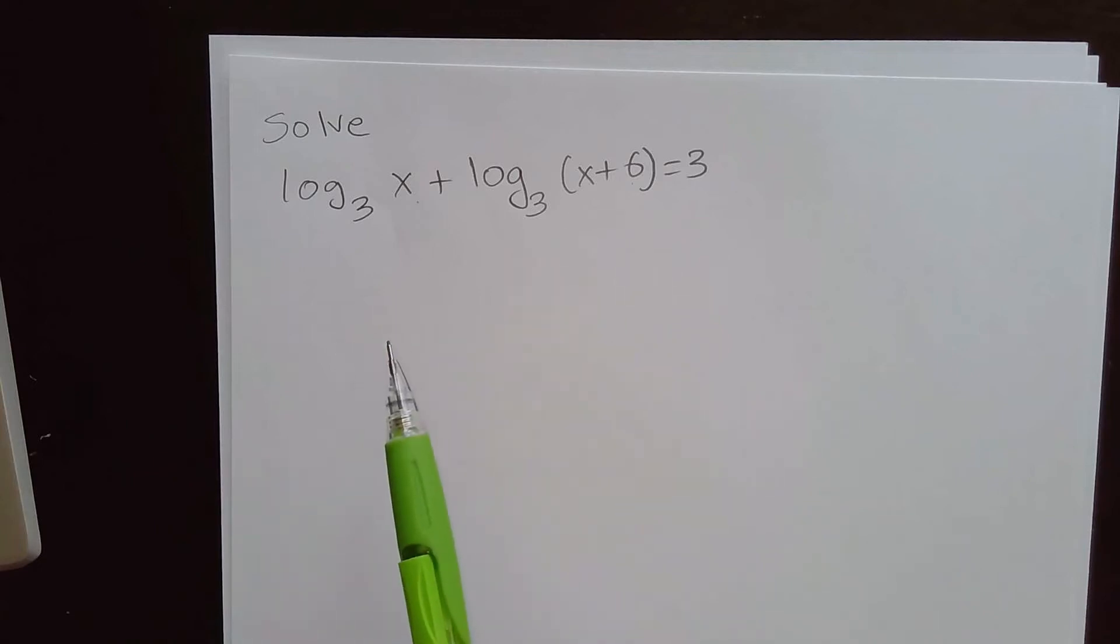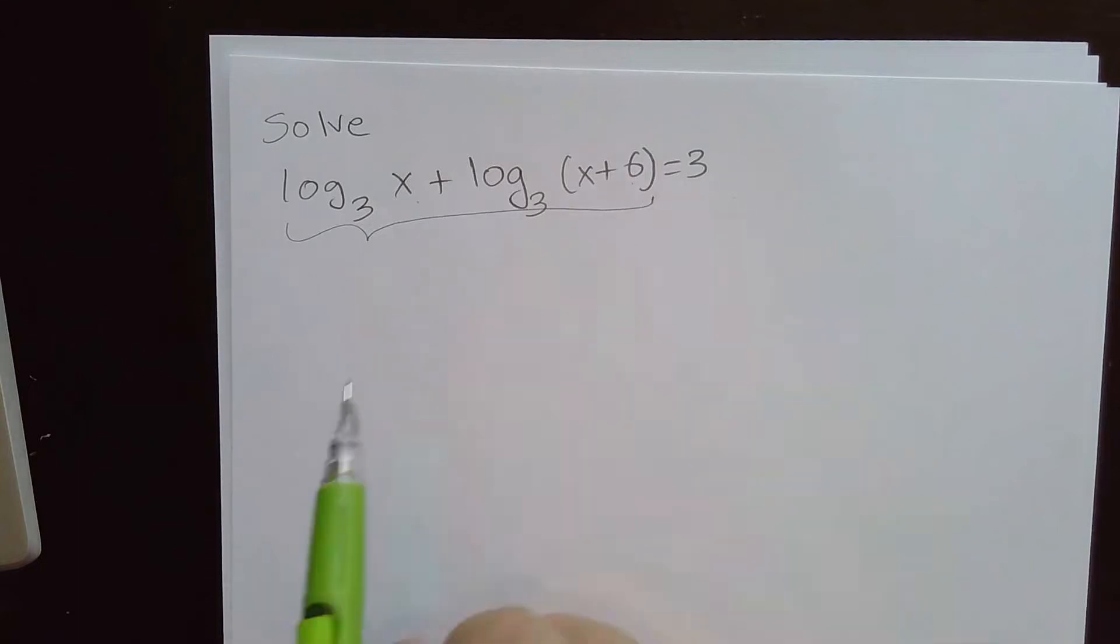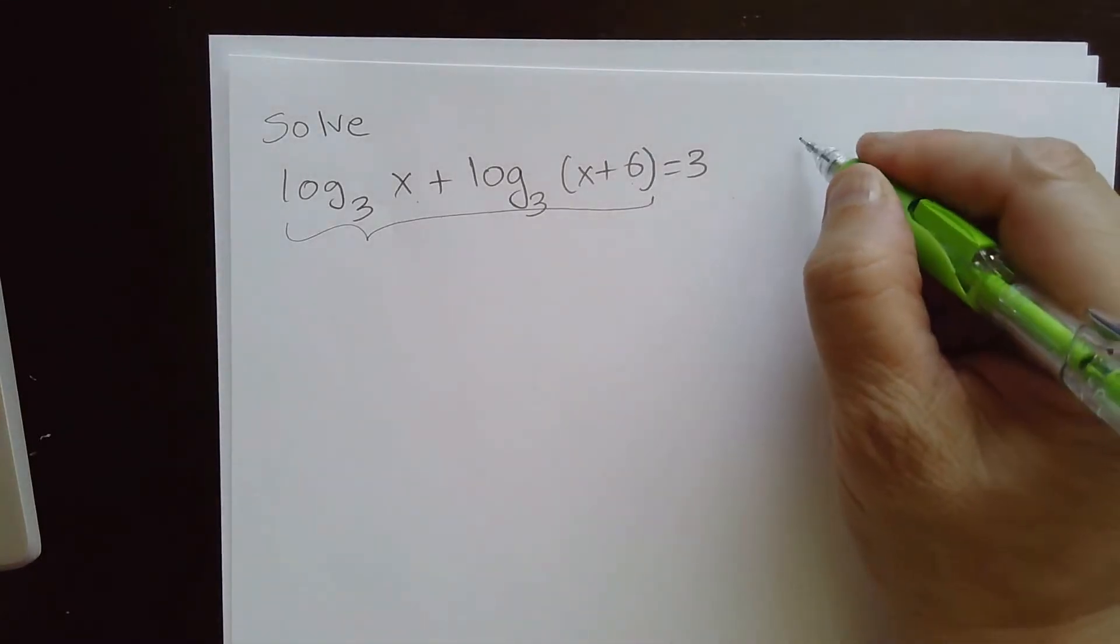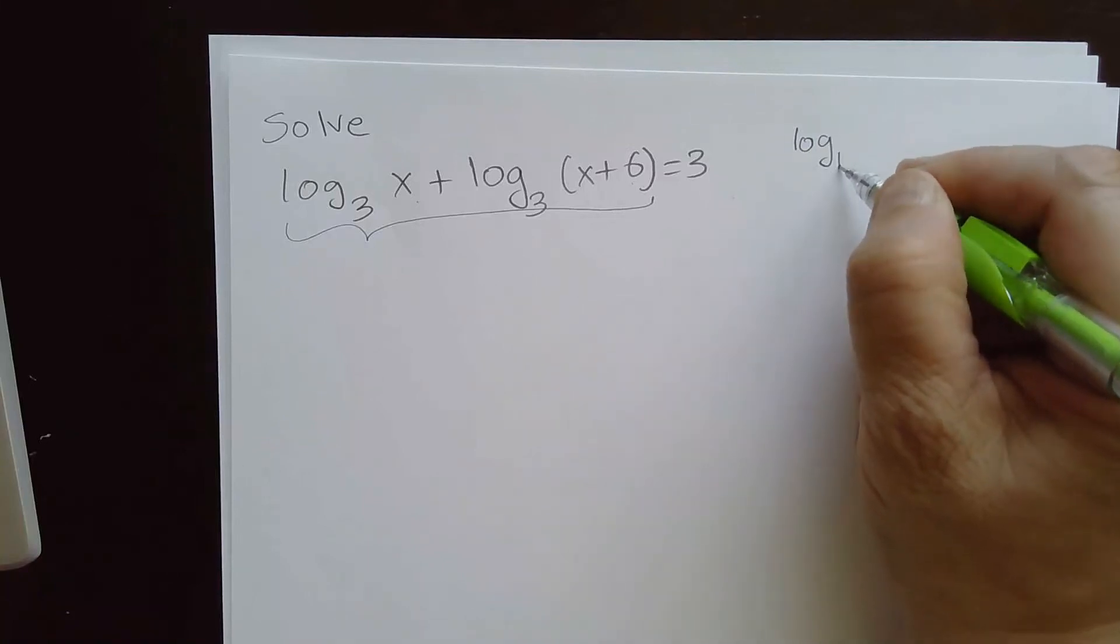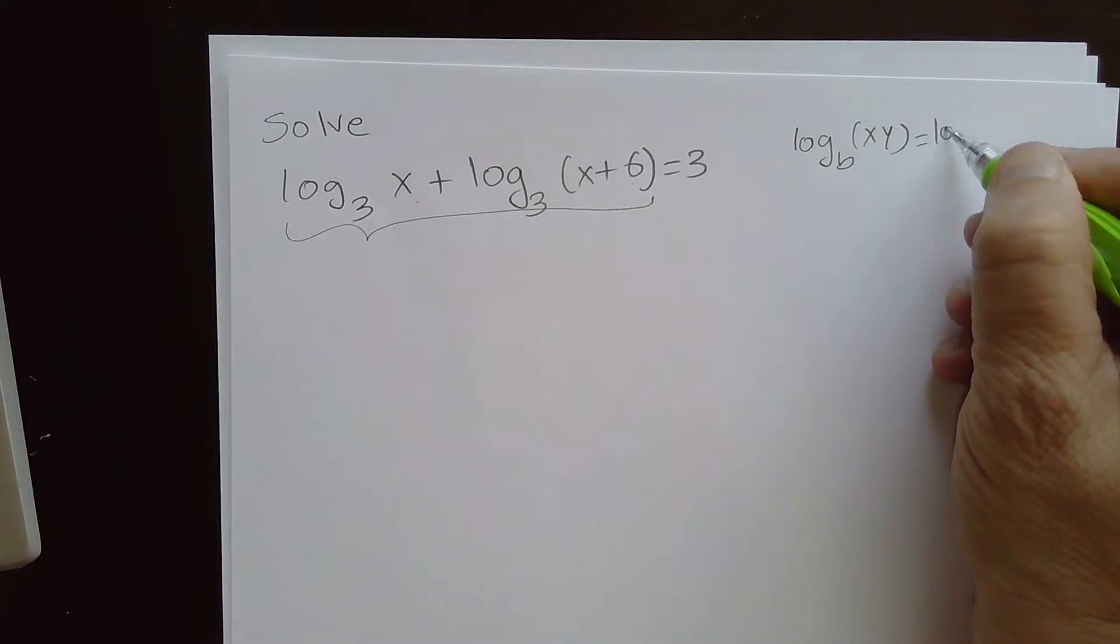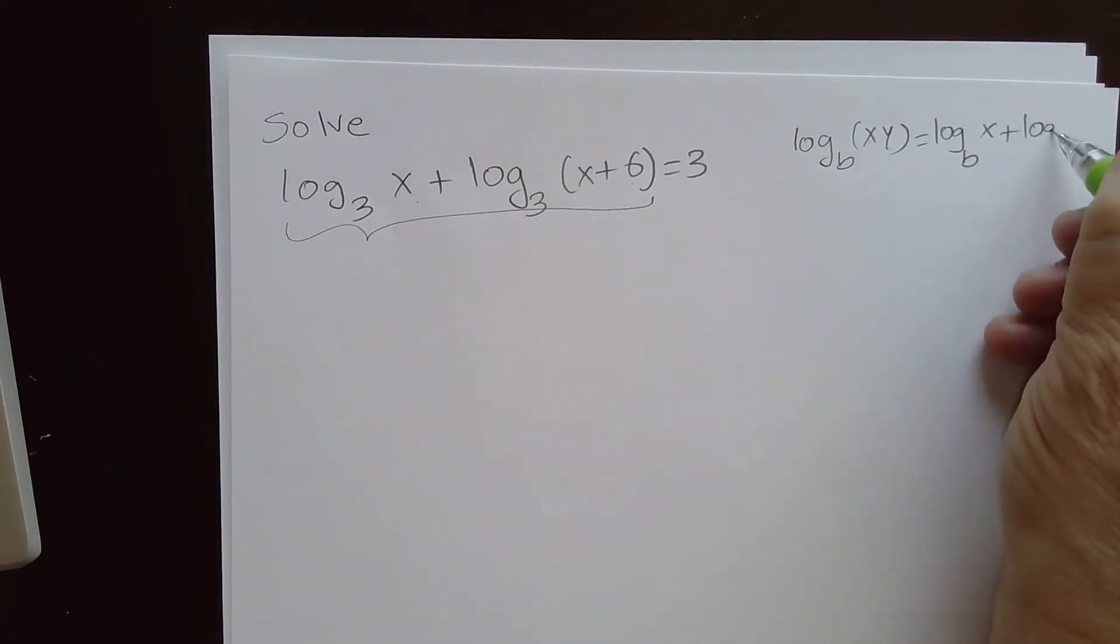Now to solve this logarithmic equation, what we need to do first is combine these two logs. If you recall one of the laws of logarithm, when you have log b of x times y, that is equivalent to log b x plus log b y.